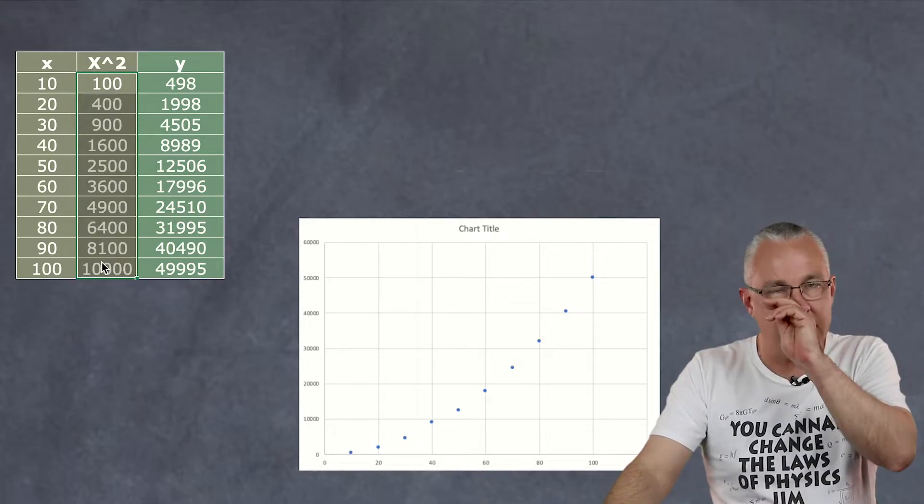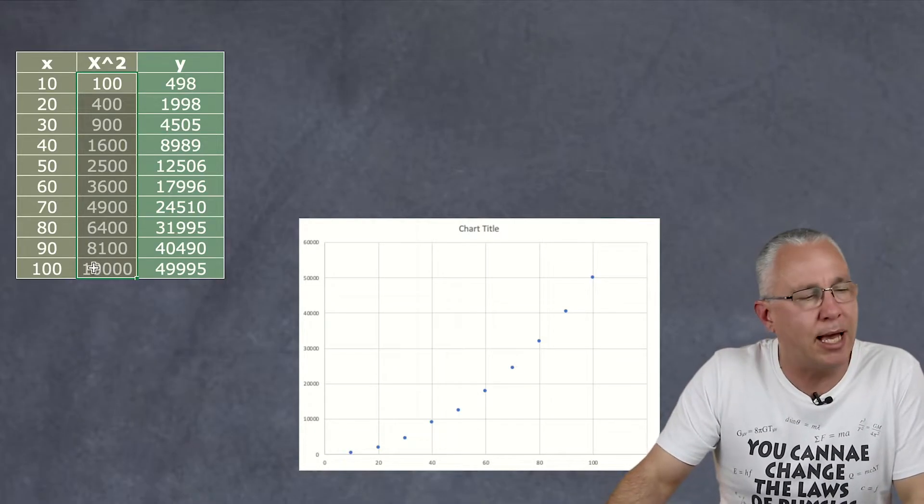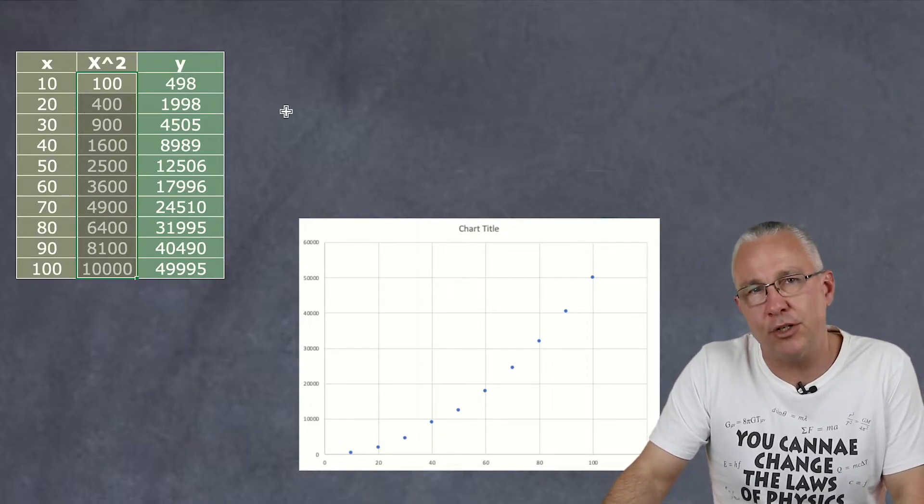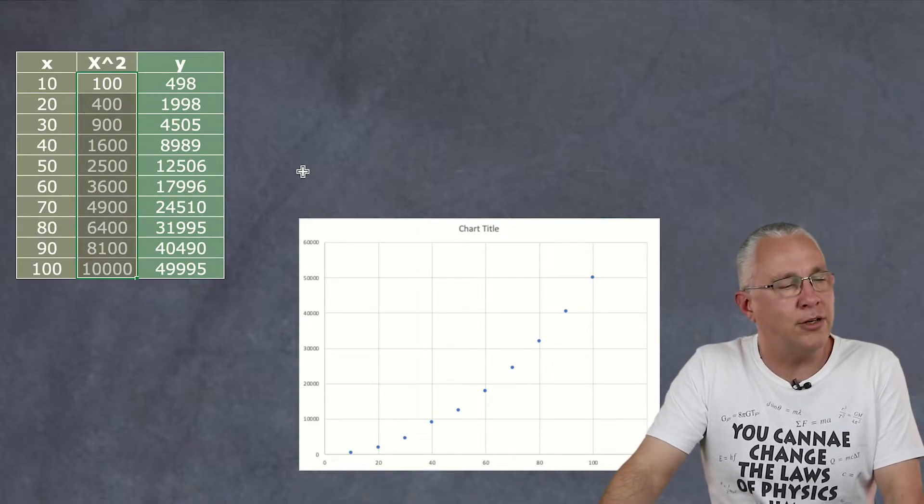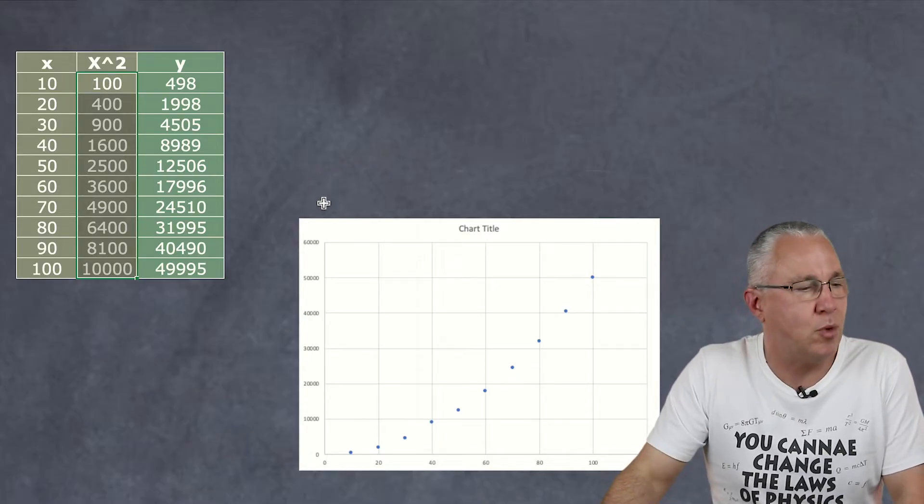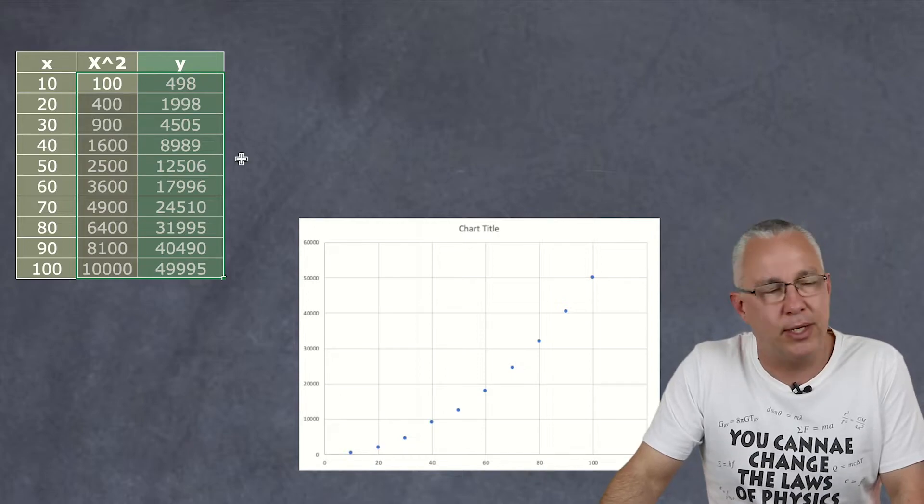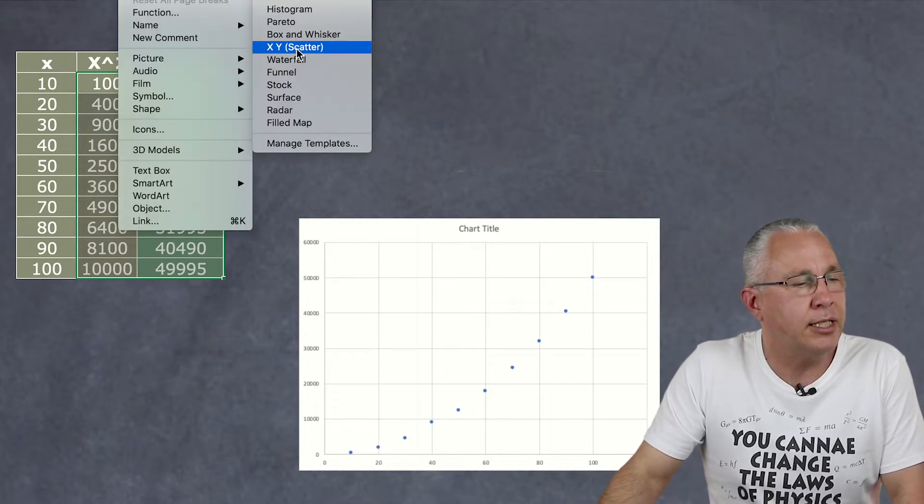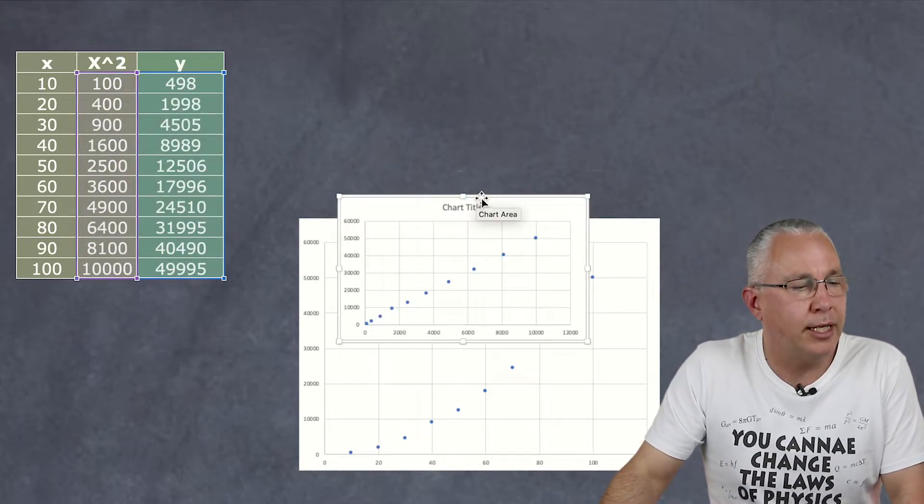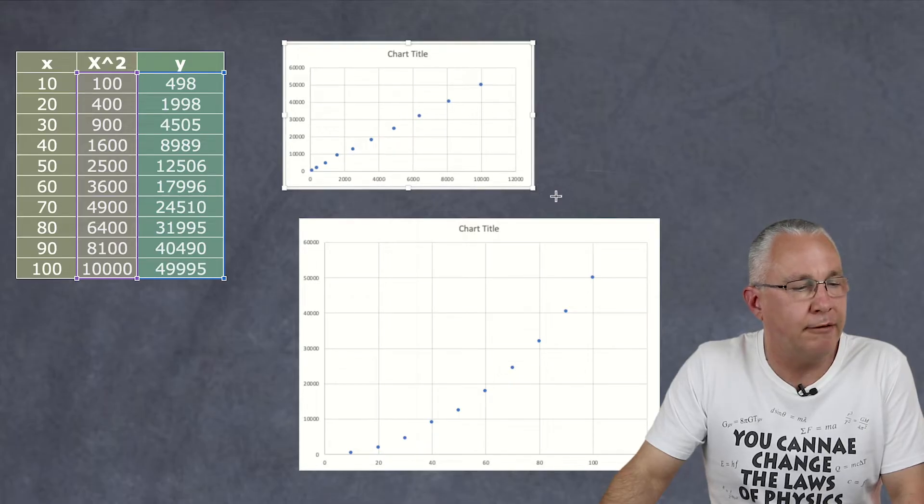In other words if I think it's a square relationship how about I graph not X versus Y. No I'm going to graph X squared versus Y. So now I'm going to draw another graph but notice this time I choose what I think the relationship is and in this case when I graph that I get a lovely linear fit.